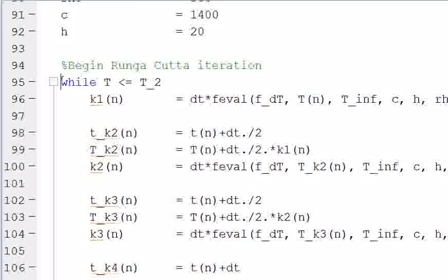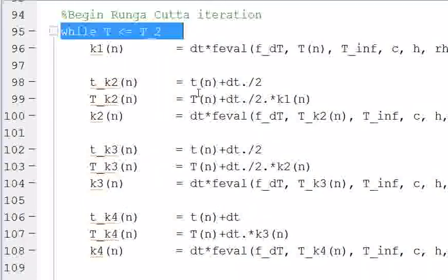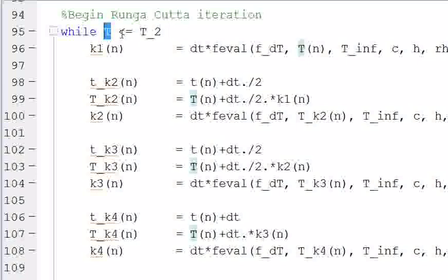And then this while loop is going to begin our Runge-Kutta scheme. So we're going to say while the temperature that we're solving for is less than or equal to our final temperature that we defined, then we're going to keep running this loop. And so if you look online, you can Google Runge-Kutta fourth order and it'll give you a numeric scheme.